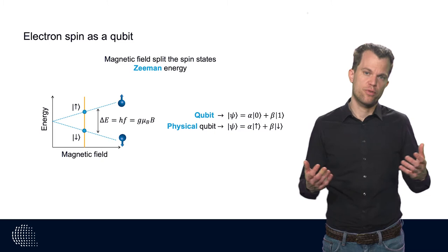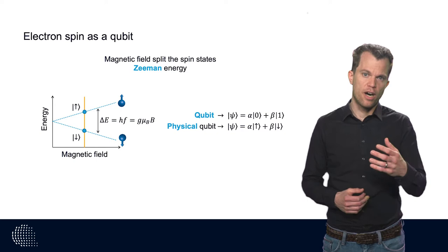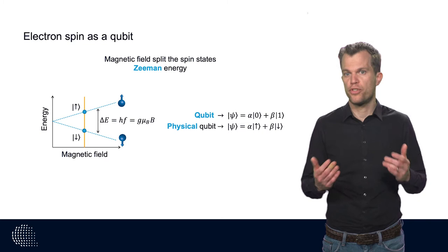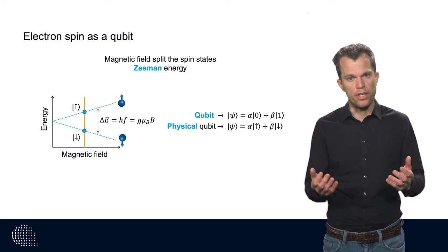These definite states are the classical states. But the qubit can also be in a superposition state, a superposition of one of these basis states. Regarding the physical qubit, this corresponds to the electron spin being in a superposition state of spin up and spin down. Note that this is not just a combination of the two, like a needle that is pointing in some direction, it can really be in a quantum mechanical superposition.